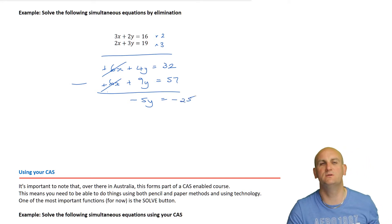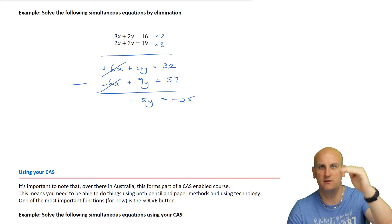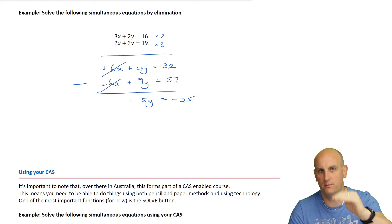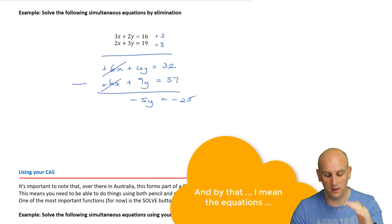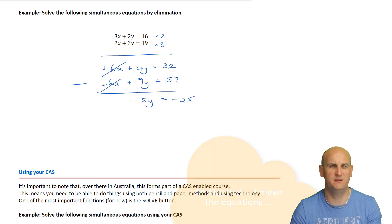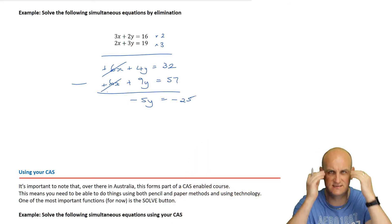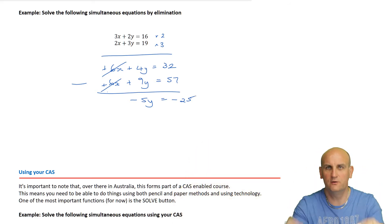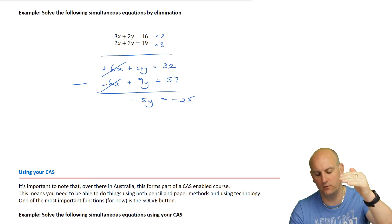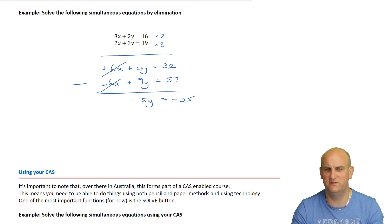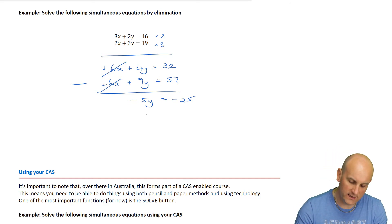People ask whether it matters if you take top minus bottom or bottom minus top - not at all. I could have done 9y minus 4y. The problem is people tend to get confused and do the y's one way but the constants the other way. Anyway, y comes out to be 5.